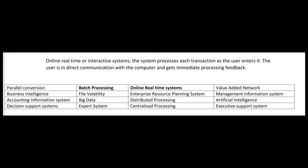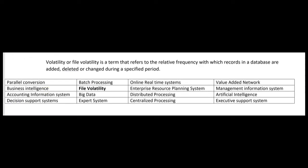File volatility is a term that refers to the relative frequency with which records in a database are added, deleted, or changed during a specified period. Records that are added, deleted, or changed more frequently have more volatility, while records that are not changed much have very low volatility.